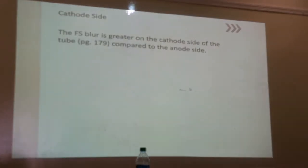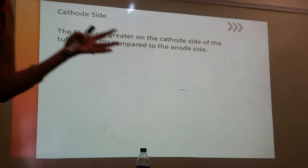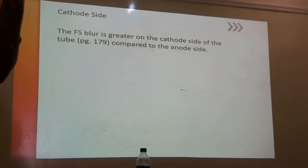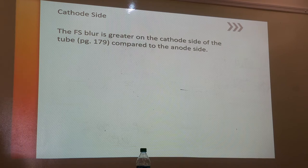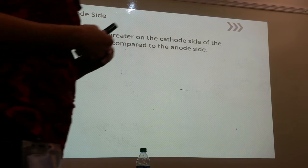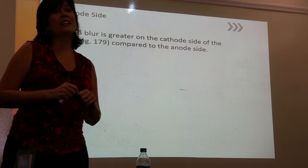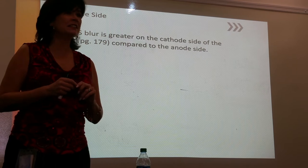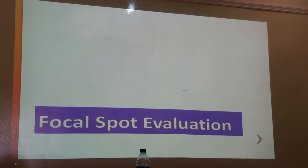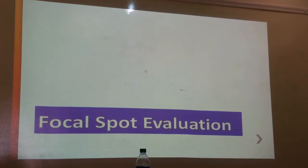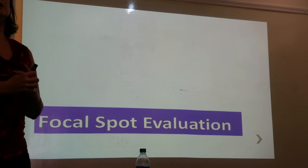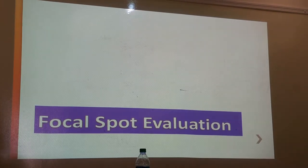The blurring of the effective focal spot is not equal from one side to the other. You get a little more blurring on the cathode side compared to the anode side. And the intensity is also greater on the cathode side. Knowing that it's blurrier on one side is not something you have many practical applications for.